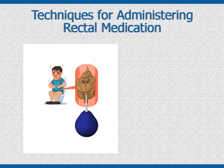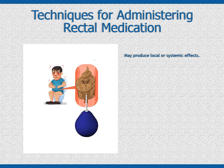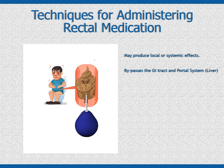The Rectal Route of Administration. Medications administered rectally can produce either a local or systemic effect. The most common forms of rectal drugs are suppositories or medicated enemas. This route of administration bypasses the upper GI tract, so they are not affected by digestive enzymes of the stomach and the small intestine, and do not irritate the upper GI tract, as some oral drugs can.